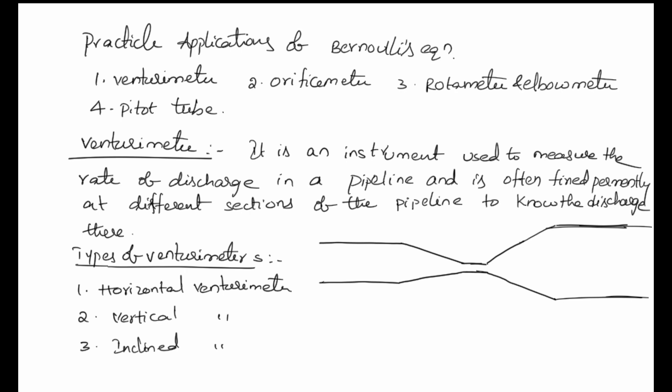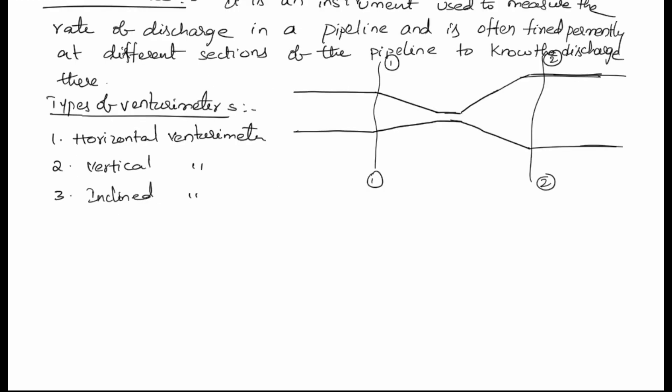The venturi meter has two sections: section one and section two. It consists of three parts. The first part is called the convergent cone, the second part is the throat, and the third part is the divergent cone.